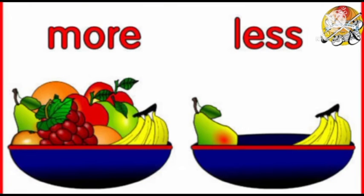Yes, this is a fruit basket. There are two baskets. In one basket, so many fruits are there. In the other basket, few fruits are there. So which one is more? Yes, the first basket is having more fruits and the second one is having less fruits.